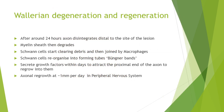When nerves undergo a lesion, they undergo Wallerian degeneration and regeneration. Around 24 hours or so after a nerve lesion happens, the axon begins to disintegrate distal to the site of the lesion and then regresses backwards. The myelin sheath then degrades afterwards. The Schwann cells are really critical to the whole process of clearing the debris and are then joined by macrophages that take over the process. The Schwann cells then reorganize themselves into forming tubes called Büngner bands, which secrete growth factors within a couple of days to start attracting the proximal end of the axon to regrow into them.